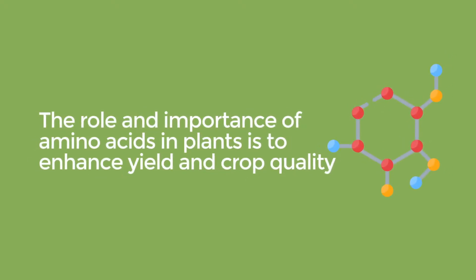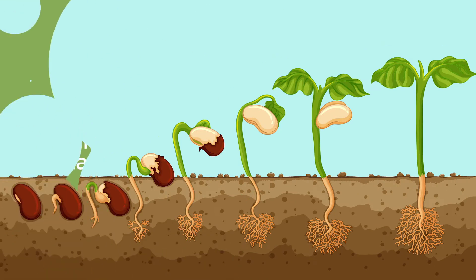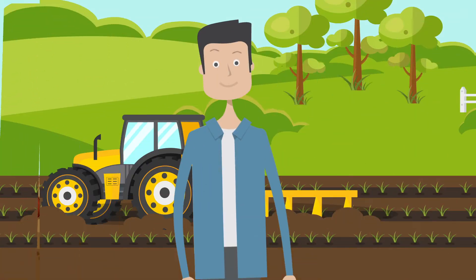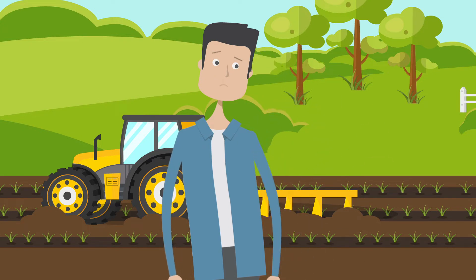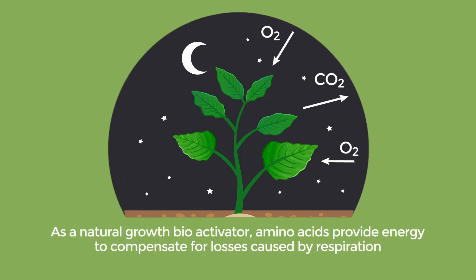The role and importance of amino acids in plants is to enhance yield and crop quality when applied at different growth stages. The quality of any crop depends on the chemical, biological, and physiological processes that take place in plant development stages. As a natural growth bioactivator, amino acids provide energy to compensate for losses caused by respiration.